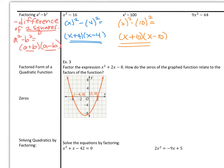The last example has an a out in front, and typically that would mean we'd have to do the a times c method. But we wouldn't have to here. Nine is a perfect square with x squared, and 64 is a perfect square. If we have 9x squared in parentheses, we take the square root of 9 and x squared, and that would just be 3x. And 64 is the same as 8 squared. Now our a and our b are 3x and 8. If we split them up into a product of smaller parts, we would have 3x plus 8 and 3x minus 8.